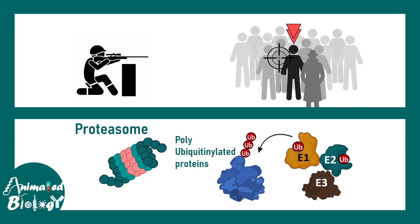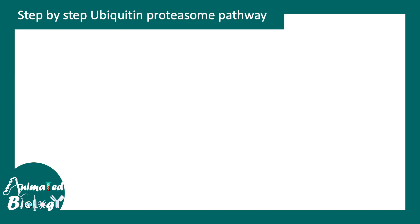The main job is done by the polyubiquitin tag, which is provided by ubiquitin enzymes. There are E1, E2, and E3 enzymes which in coordination flag the particular protein with a polyubiquitination mark, and that's the key mark for degradation by the proteasome. Let us talk about the step-by-step process of the ubiquitin proteasome pathway.